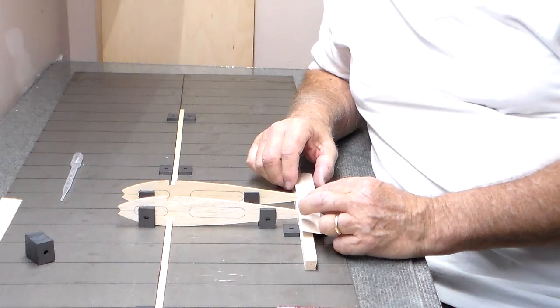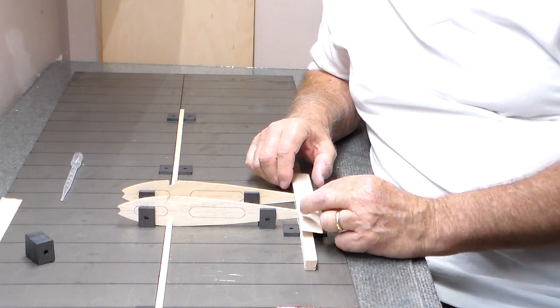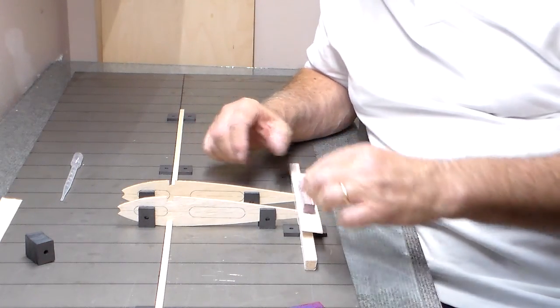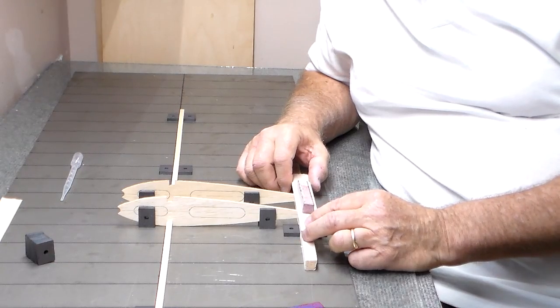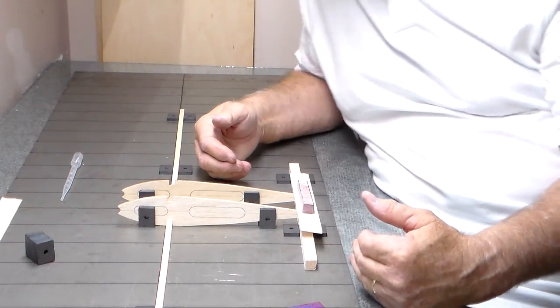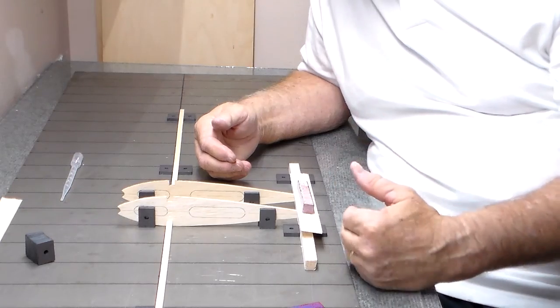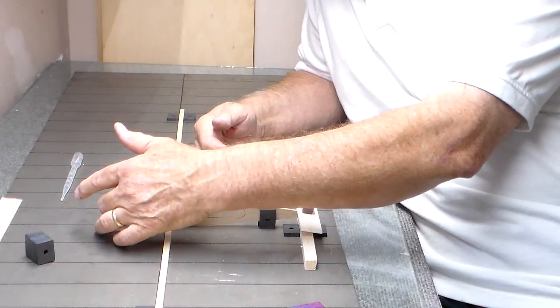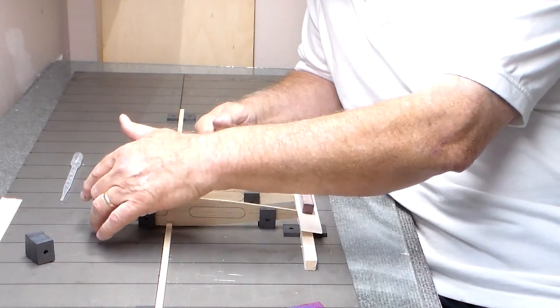Then drop these on where they're supposed to go and then you can just take a little weight of some sort and put it on there until it dries. Your back of your ribs will line up as they should, straight. So will the front. You can take your piece of one quarter by one quarter and put it in there.